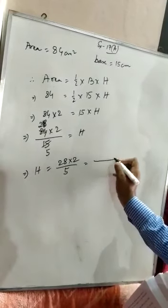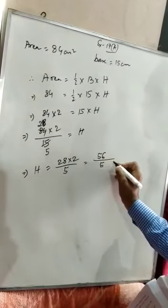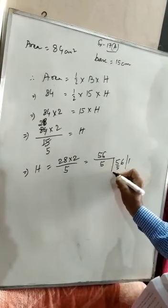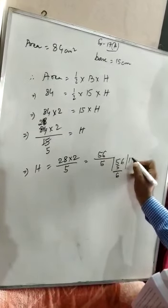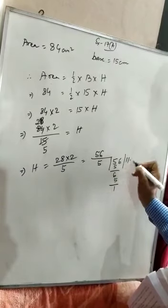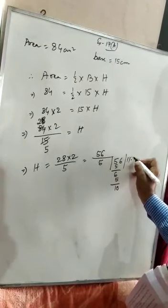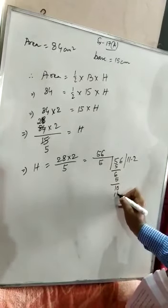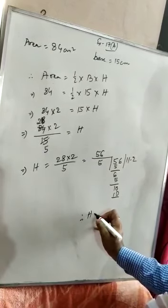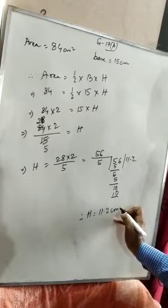56 divided by 5: 5 goes into 56 eleven times with remainder 1, then using a decimal we get 10 divided by 5 is 2. Therefore, height equal to 11.2 centimeter.